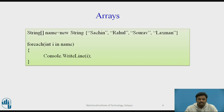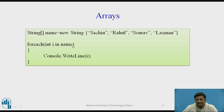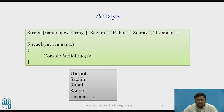One more example: if I want to store a string array called 'name' with values like Sachin, Rahul, Saurav, Lakshman — they are stored at indices zero through three. To display all elements using a foreach loop, we write 'foreach (int i in name)' and 'Console.WriteLine(i)'. The output will be Sachin, Rahul, Saurav, Lakshman. Note that if I try to store the number 10 in this string array, it will be stored as a string — only strings are allowed because arrays are of the same data type.